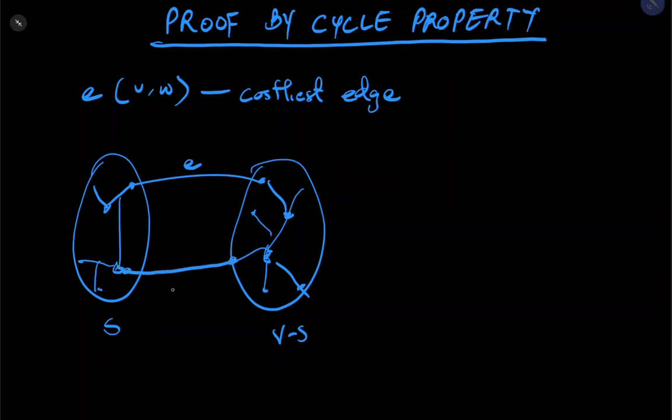Let's say this edge goes from here to here, E prime, which is a cheaper edge. That means E is a costlier edge than E prime.